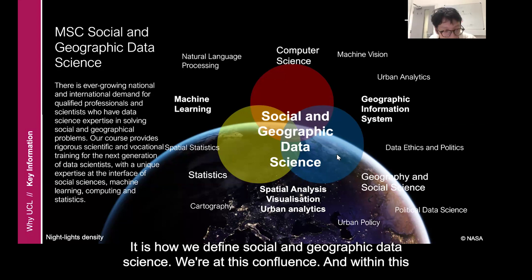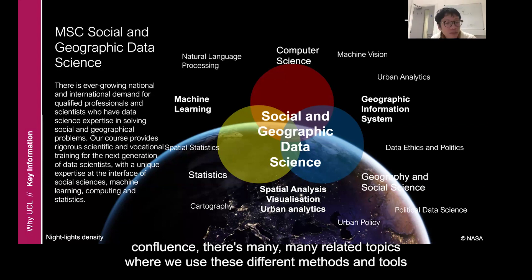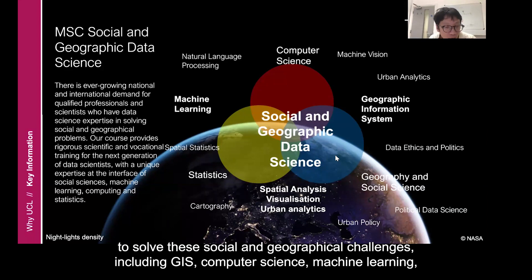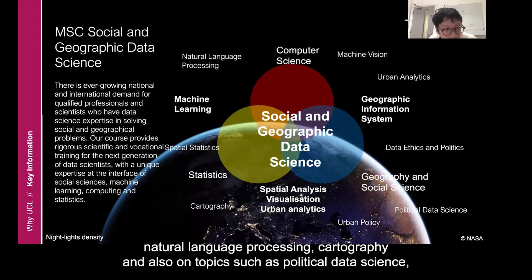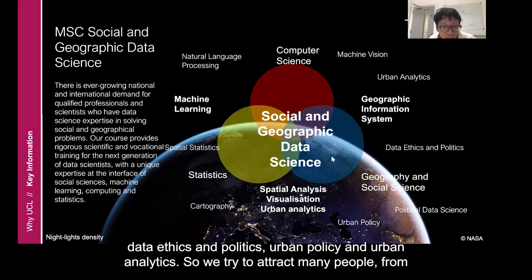We're at this confluence. And within this confluence, there are many related topics where we use these different methods and tools to solve social and geographical challenges, including GIS, computer science, machine learning, natural language processing, cartography, and also topics such as political data science, data ethics and politics, urban policy, and urban analytics.